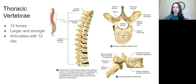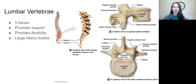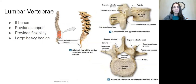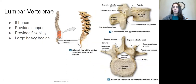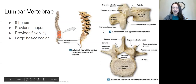Don't forget that thoracic vertebrae articulate with 12 ribs. After that, lumbar vertebrae — worked on a lot, and the first case talked about in your book is lumbar laminectomy. Don't forget those five bones, and know its two main responsibilities: it provides support and flexibility. The vertebral body is larger and heavier because it's providing a lot of support for your body and also that flexibility. Still a big spinous process to take off, and lots of bone milling happening on these cases also.